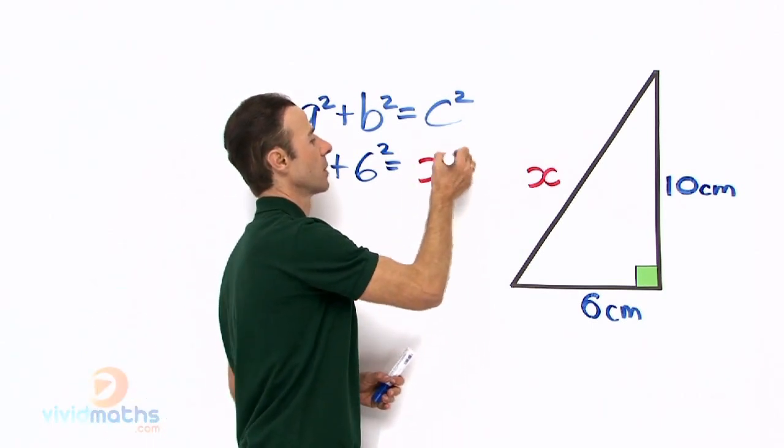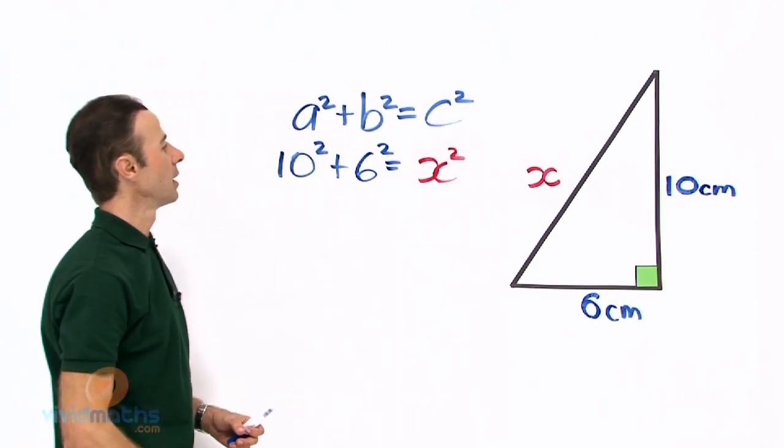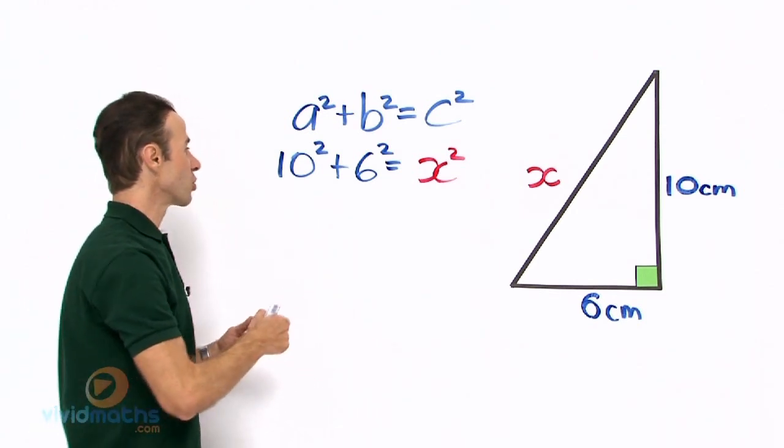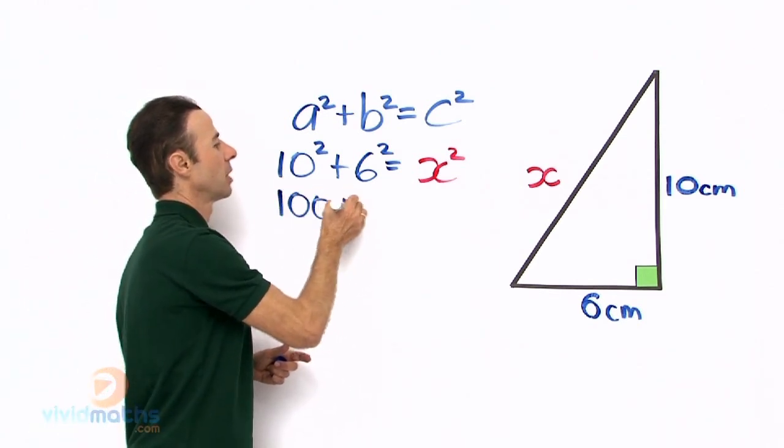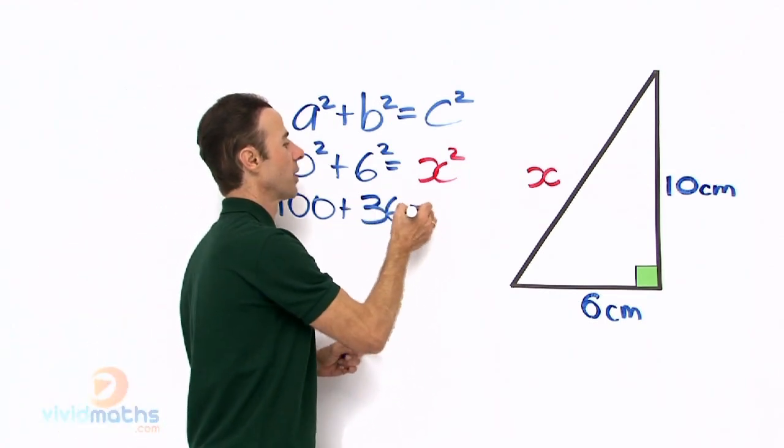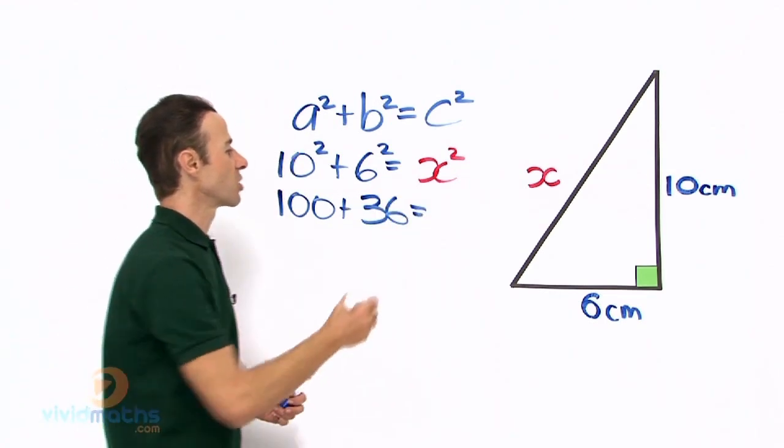Let us see if we can add up the left hand side. We have 10 squared which is 100, plus 6 squared which is 36, and that equals still x squared.